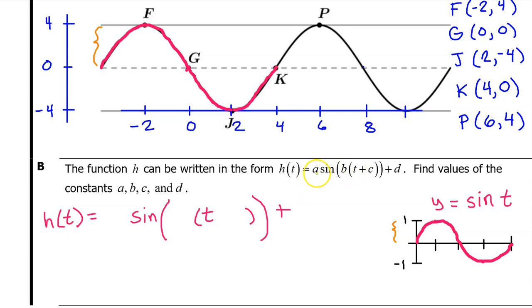The A value gives a vertical dilation. So look at the parent function. The distance from the midline to the highest point is one. Now compare that to the same distance on the graph of H of T. The distance from the midline to the highest value is four. That's a vertical dilation by a factor of four. So the A value is four. In the context of periodic functions, this is called amplitude. So learn this term.